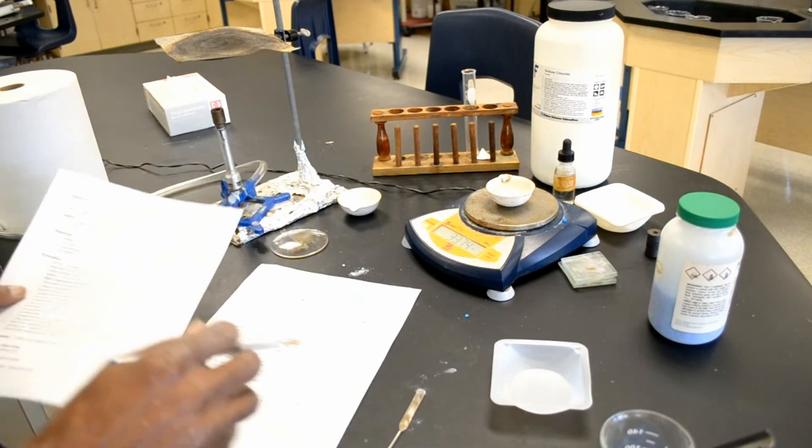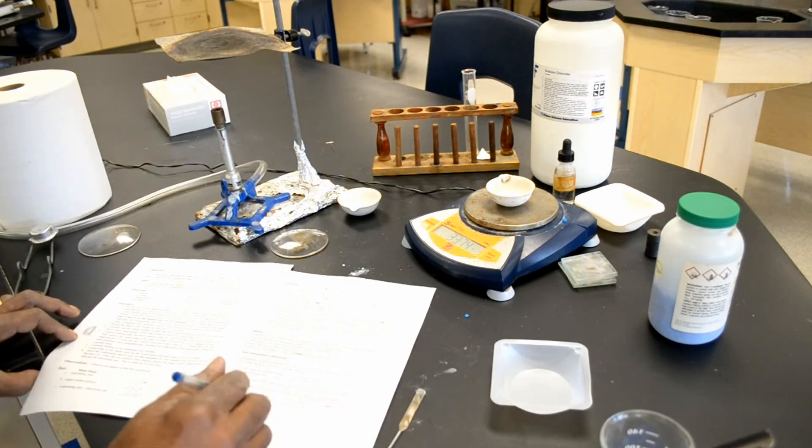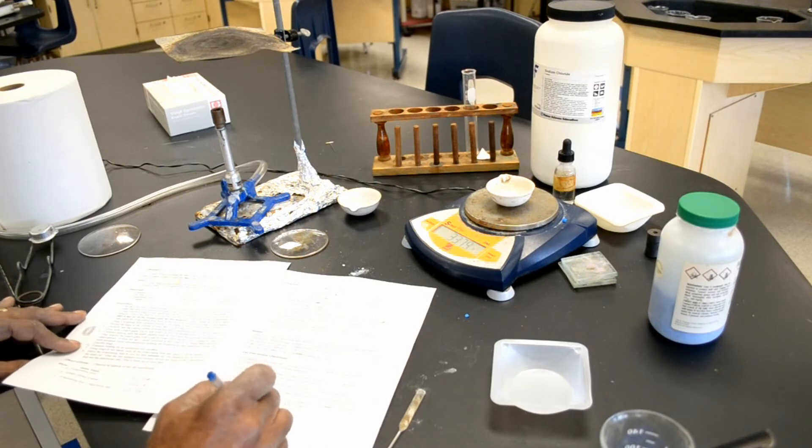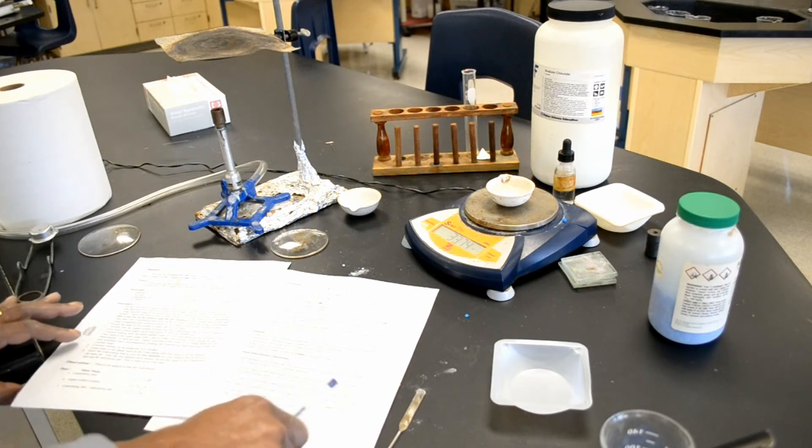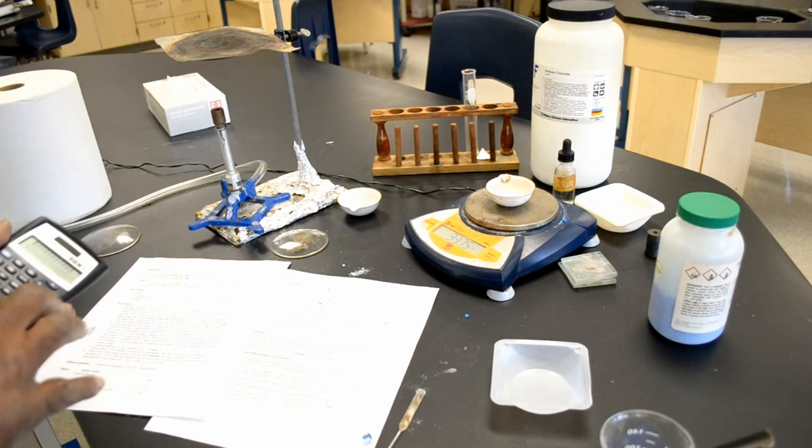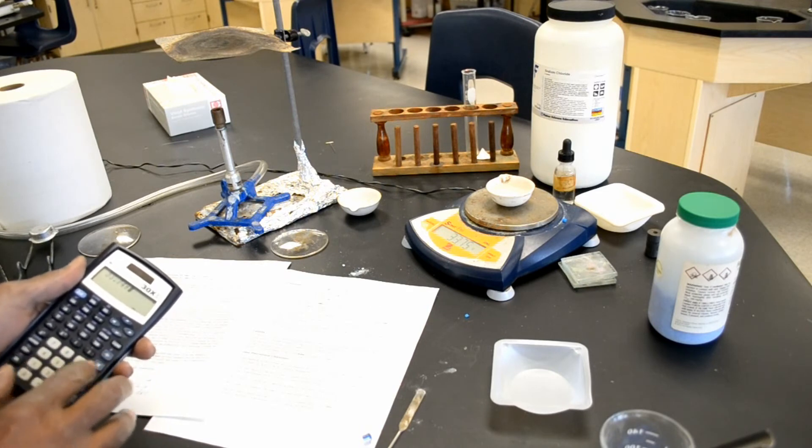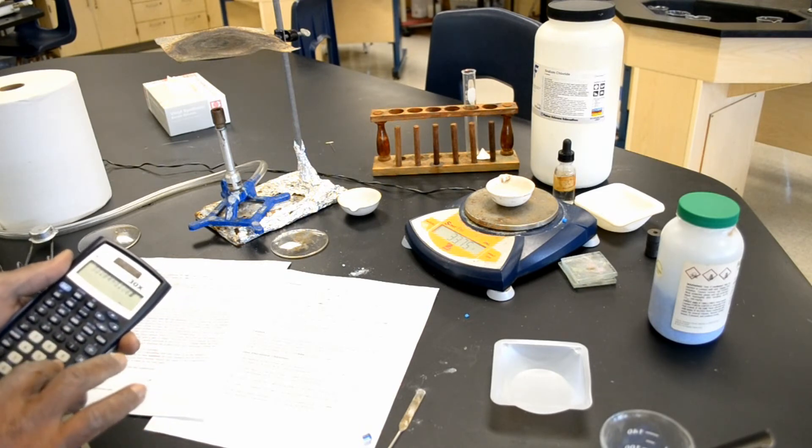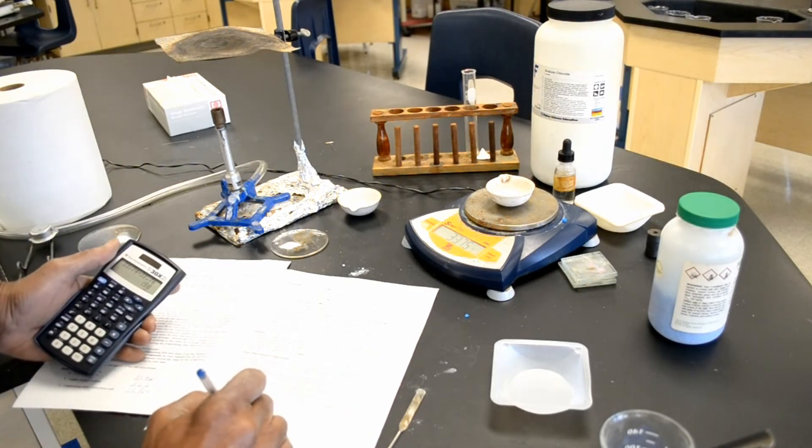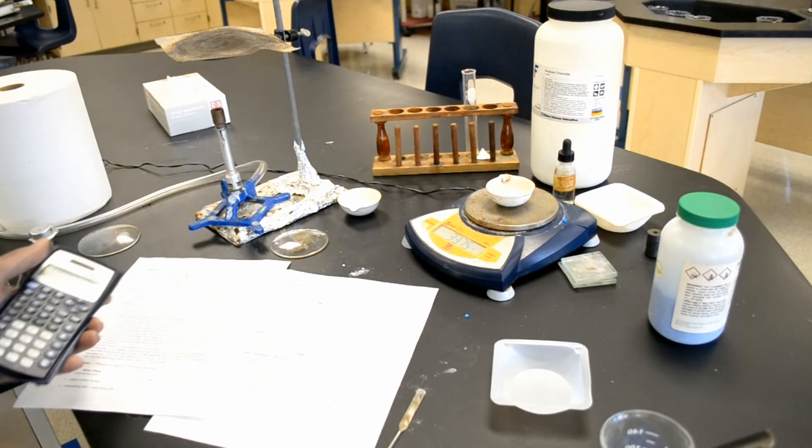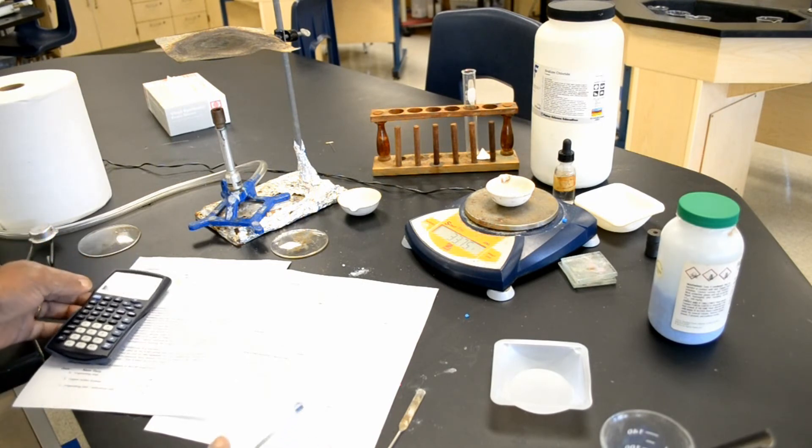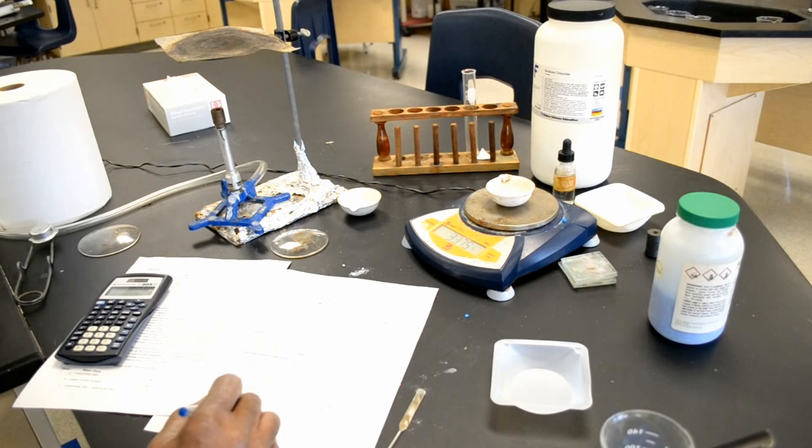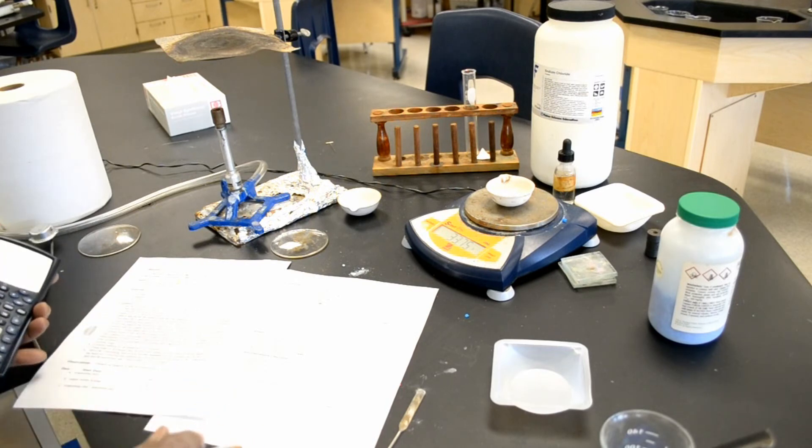Now, in order to find the amount of water that was lost, I must now subtract 31.76 from 33.74. 33.74 minus 31.76 and that gives me 1.98. So, 1.98 is the difference between the mass of the empty evaporating dish and the mass of the anhydrous salt plus the evaporating dish.